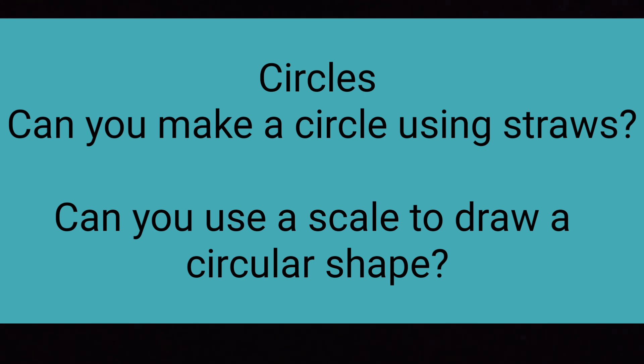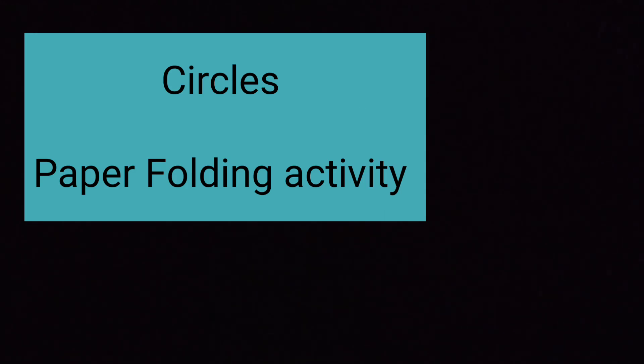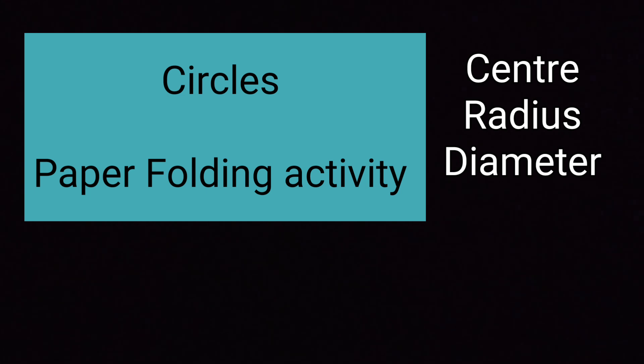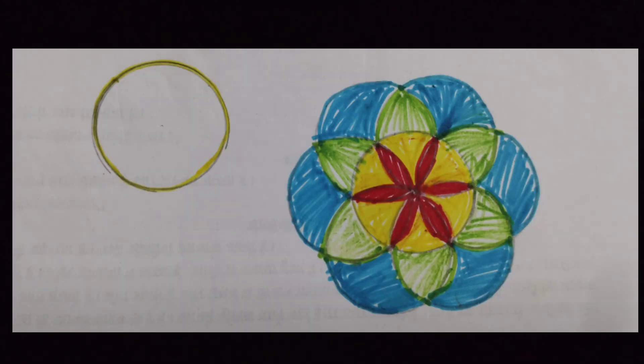Next, you have a paper folding activity. Using this activity, you would learn about the different parts of a circle. The center, radius and the diameter. We know that a circle can be easily made using a compass. So, using a compass, you have to make a rangoli. And that is given on page number 18. Where a beautiful rangoli is given that you need to draw using circles.